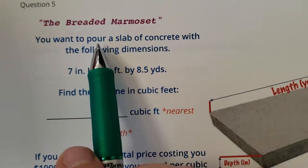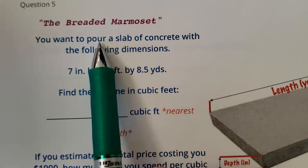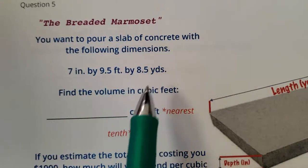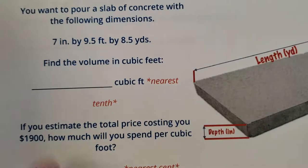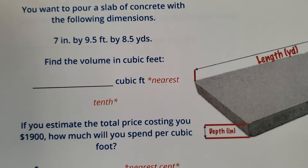You want to pour, is that the right pour? I think it is. You want to pour a slab of, yeah, two O's would be the other type of pour. Okay, you want to pour a slab of concrete with the following dimensions. It's seven inches by 9.5 feet by 8.5 yards.